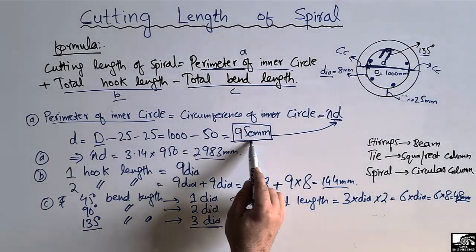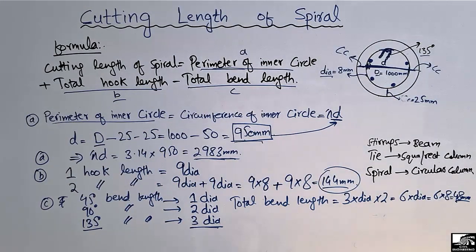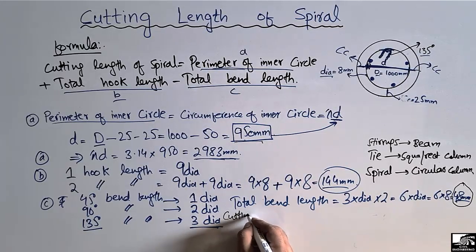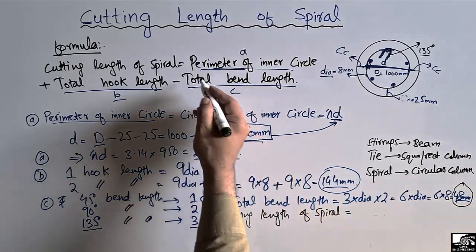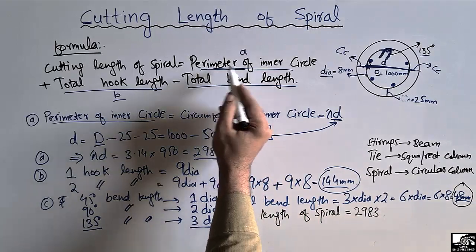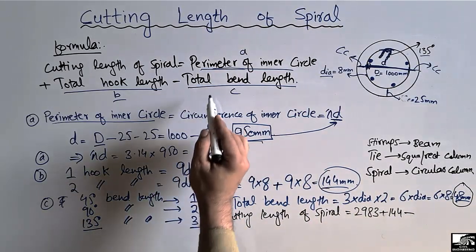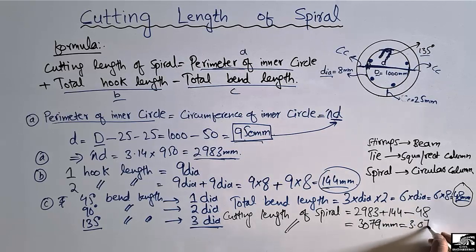Now putting all values into the formula: Cutting Length = Perimeter of Inner Circle + Total Hook Length − Total Bend Length = 2983 + 144 − 48 = 3079 mm, or 3.079 meters. This is the method to calculate the cutting length of the spiral for any given column dimension.